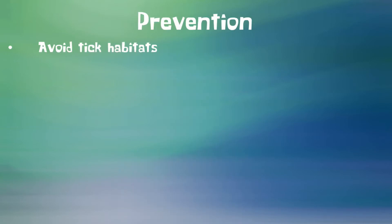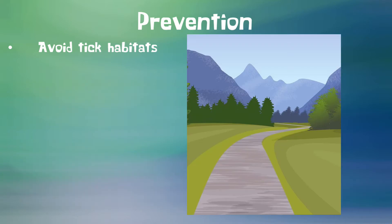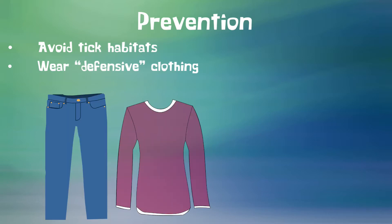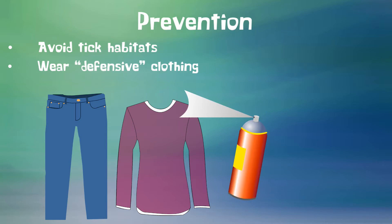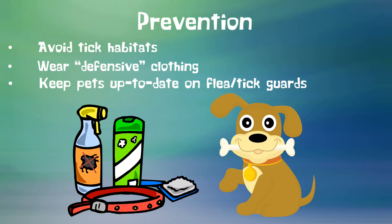Prevention. Try your best to avoid areas where ticks live, such as leaves, grass, brush, and logs. Try to stay on clear trails and paths rather than walking through brush. Wear defensive clothing, such as long pants and sleeves and light colors, so ticks can be spotted easily. Buy clothing that has been pre-treated with tick repellent, or you can purchase tick repellent that can be sprayed on clothing, which stays even after a few washes, or tick repellent to put on the skin directly. Make sure you keep your animals up to date on flea and tick guards.